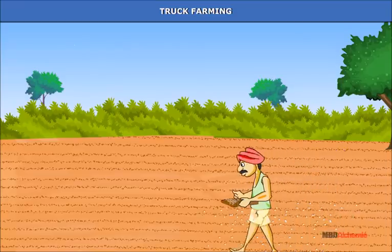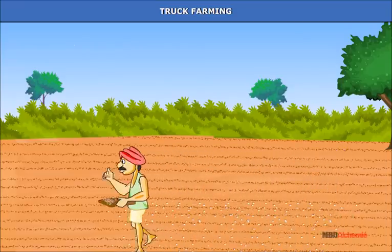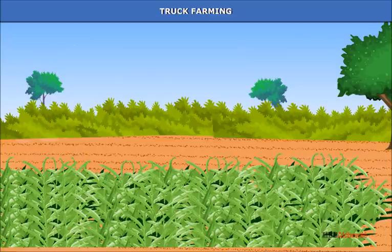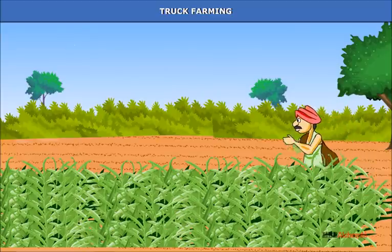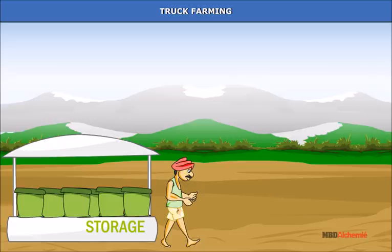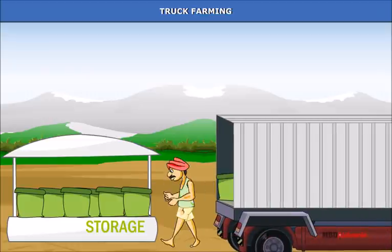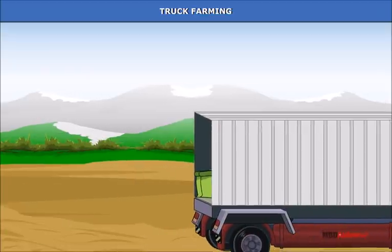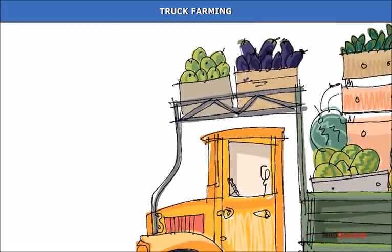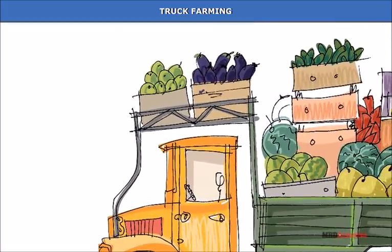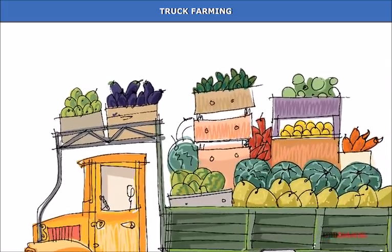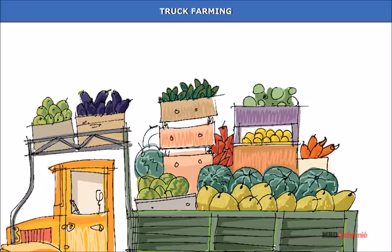Truck farming: Trucks are commercial vehicles used for carrying goods from manufacturing centers to markets in urban areas. This type of farming is so called because vegetables, fruits and flowers are perishable commodities transported in trucks. The vegetable farms in India cater to local markets, unlike in Europe and the USA where these perishable commodities are carried vast distances across states and even countries using air transport.